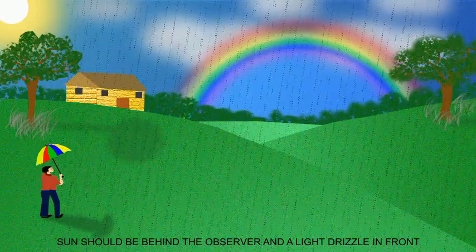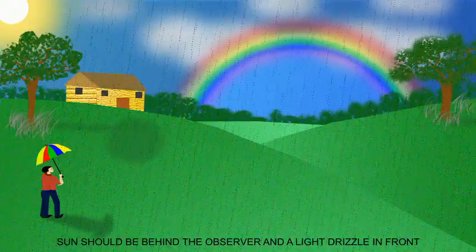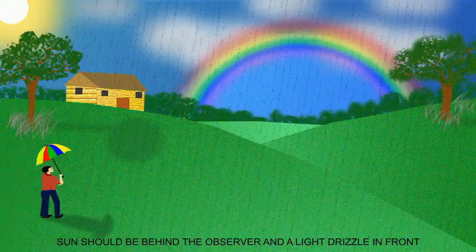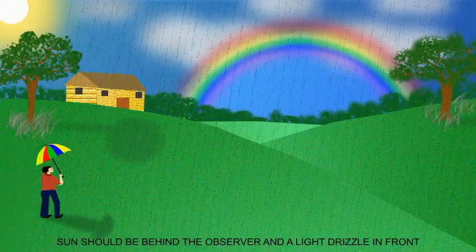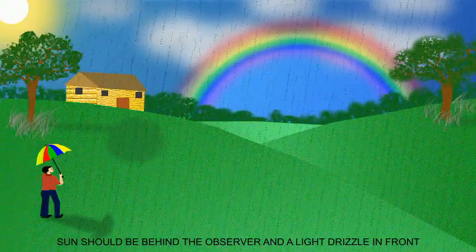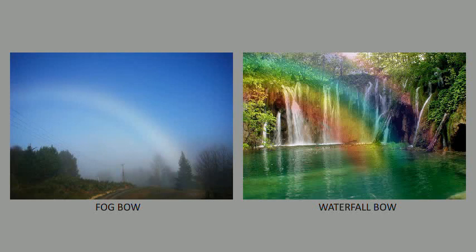Rainbow is formed when there is both sunlight and raindrops in the sky. It is best seen when the sun is low and behind the observer and the raindrops are in front of the observer, possibly from a light drizzle. If conditions are favorable, fog, mist or waterfalls instead of raindrop will do.